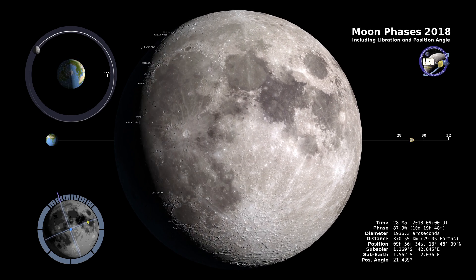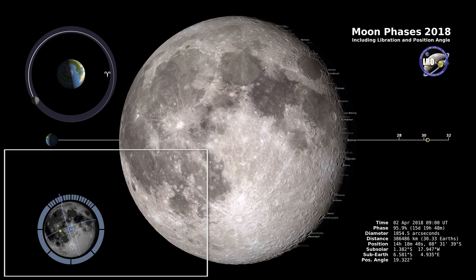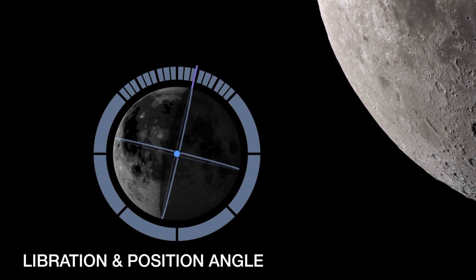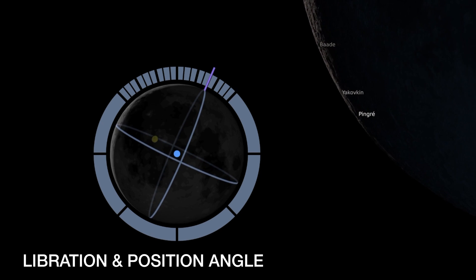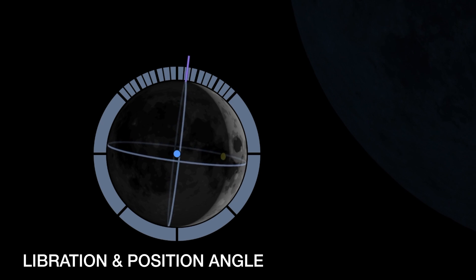Below that into the left we have the libration and position angle animation and you can see the phase of the moon is represented there. You can also see how the moon rocks right and left. That's called libration and the moon is wobbling as it goes around the earth and so we have an animation to show us exactly what's going on there.